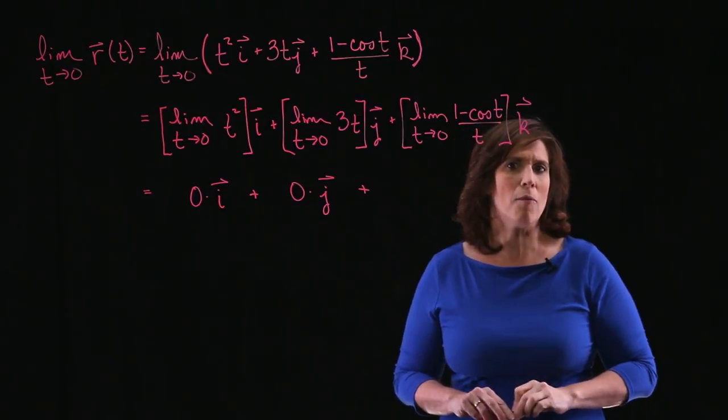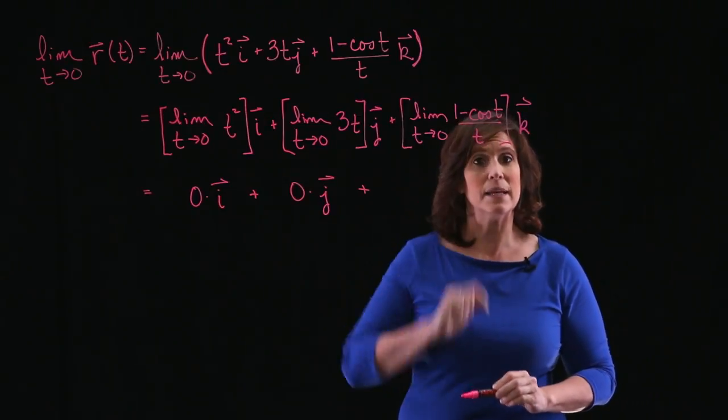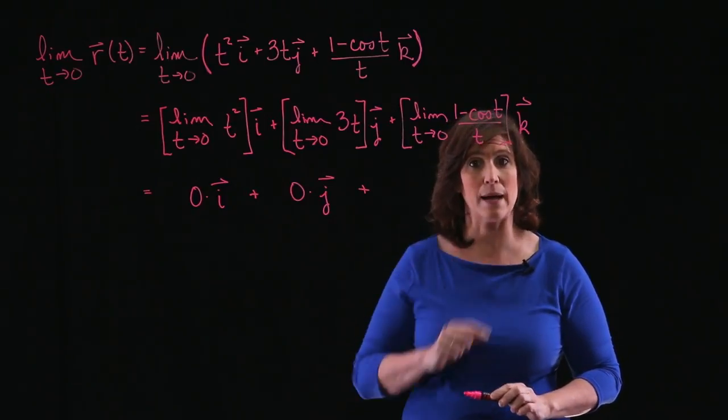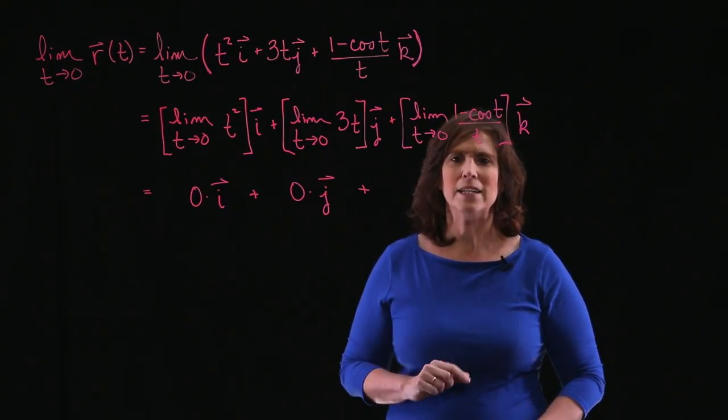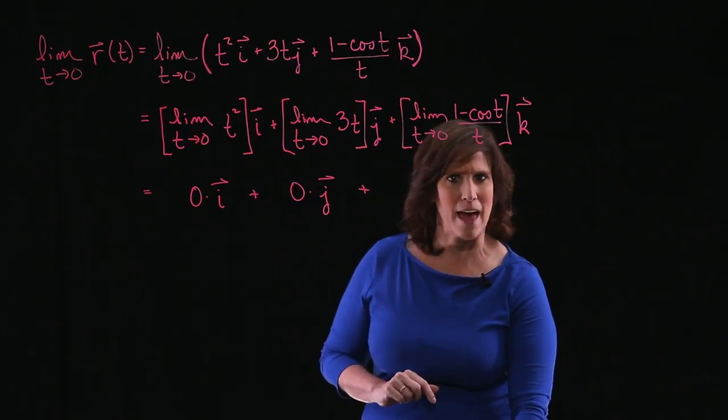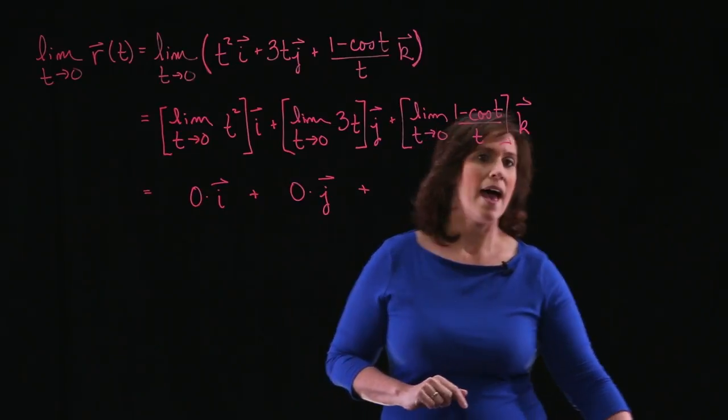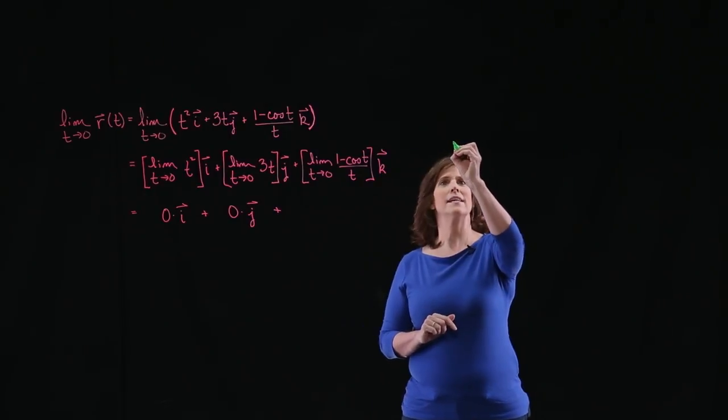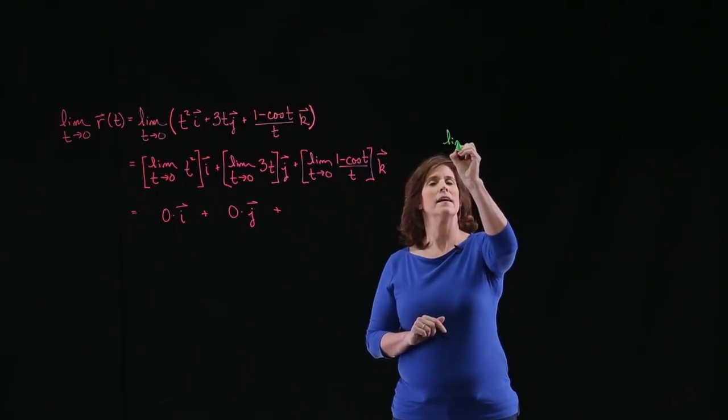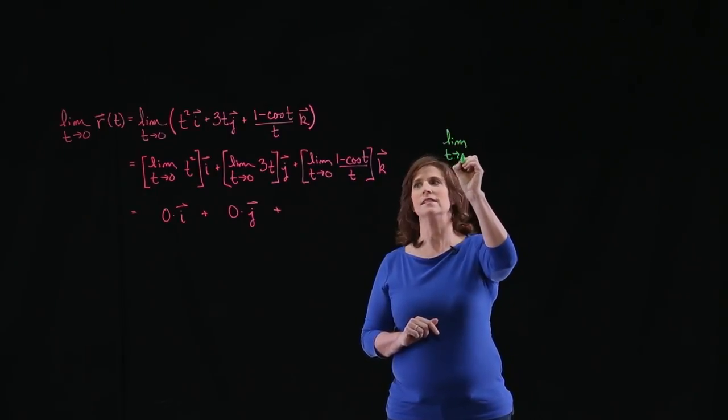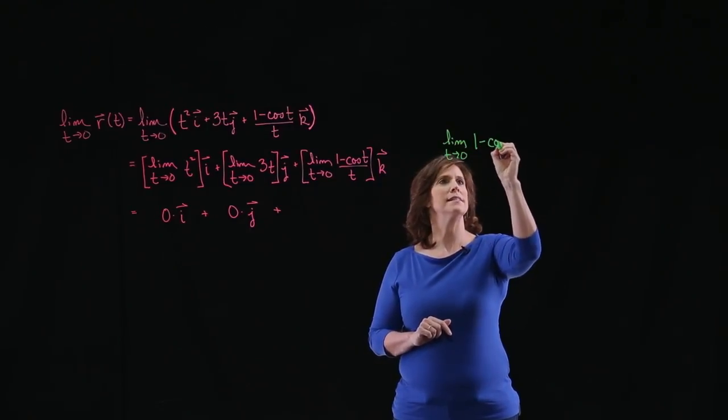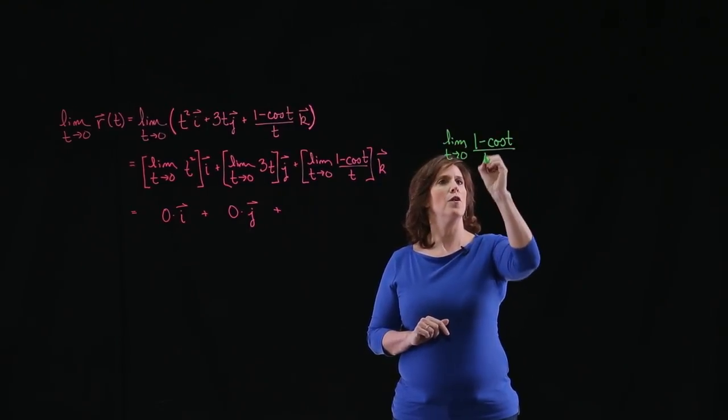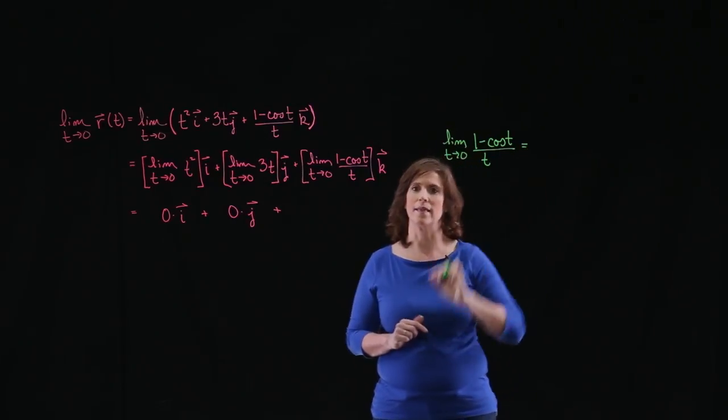However, if you recall by the squeeze theorem, this limit equals 0. So I can just write 0 times vector k. But let's say for a minute that you don't remember that fact. Let's go ahead and calculate that. So I'm going to do a little side work. And I'm going to say that the limit as t approaches 0 of 1 minus cosine t over t. I'm going to try to evaluate that.